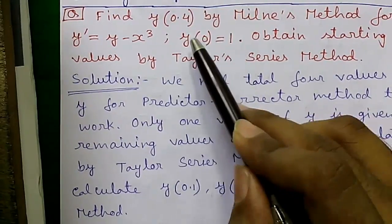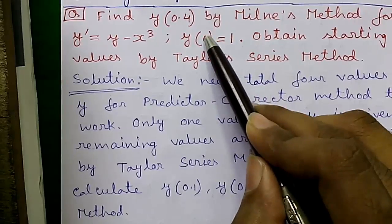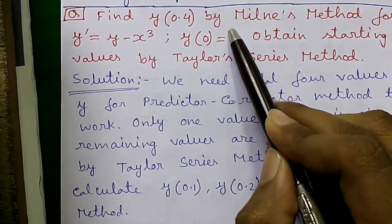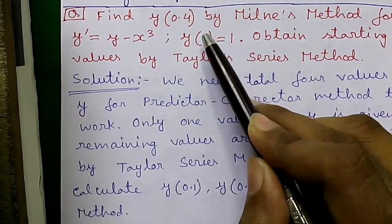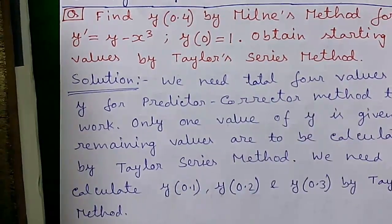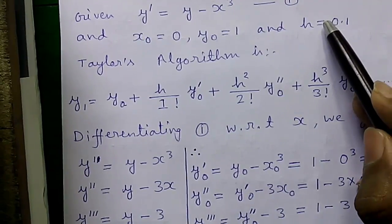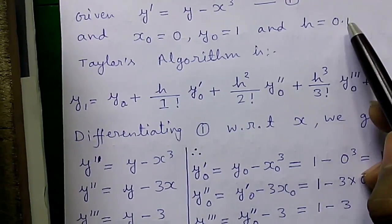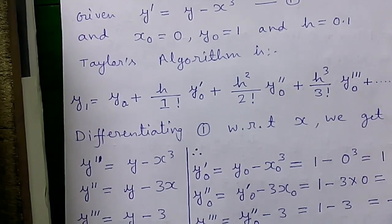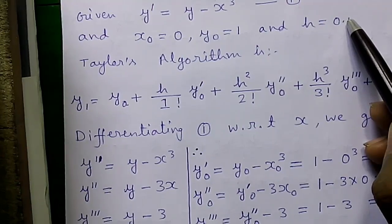The value inside the parenthesis represents the x₀ value and the value on the right-hand side represents the y₀ value. So x₀ = 0 and y₀ = 1. And h is the increment in the value of x — first x was 0, next 0.1, next 0.2, then 0.3 and 0.4 — so the increment is 0.1, hence h = 0.1.